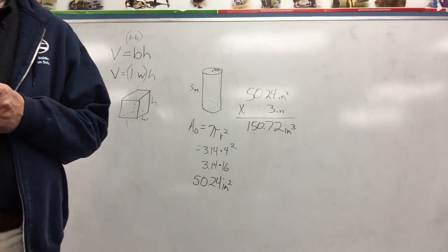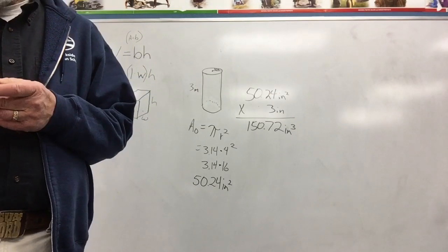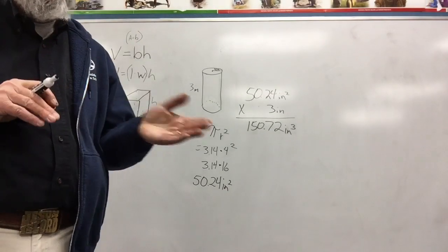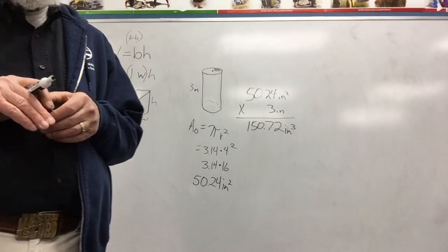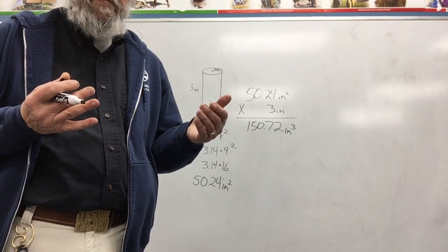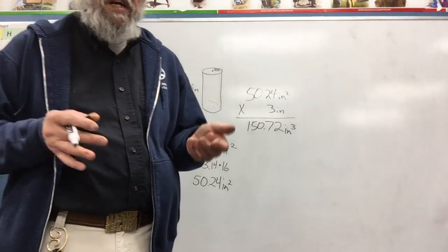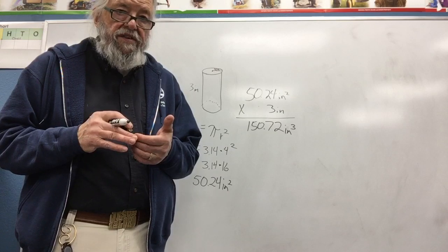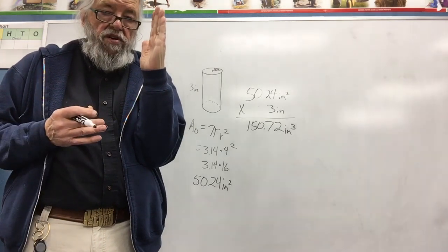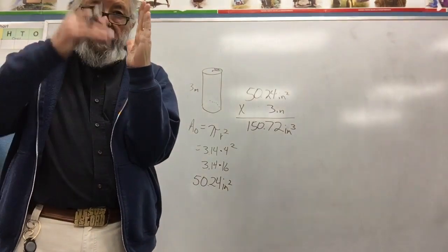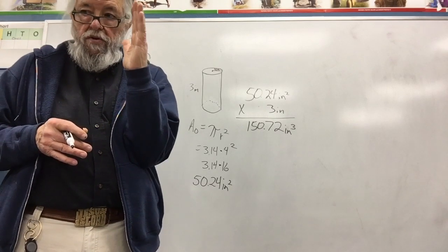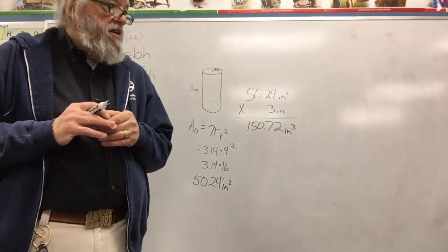On page 419 in the skills check, you have three different cylinders to work on. Notice that number two has the cylinder laying on its side — just like some triangular prisms were on their side — and it might be confusing figuring out what the height is. The 10 meters is not the length; if you stand it up on its base, the height would be 10.